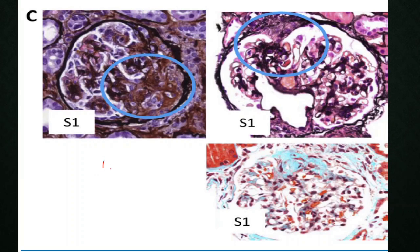One important point regarding mesangial expansion: it is better seen with PAS stain than with methenamine silver stain. For segmental sclerosis, Jones methenamine silver stain is used and is better for highlighting segmental sclerosis.